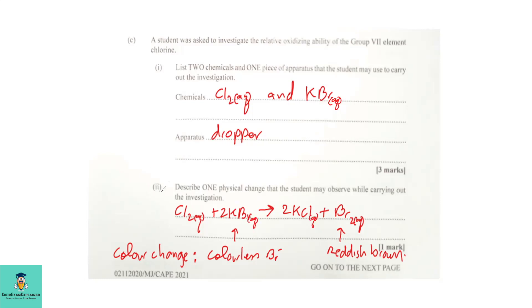See part two. Describe one physical change that the student may observe while carrying out the investigation. Well, you are going to add aqueous chlorine drop-wise to a test tube containing aqueous potassium bromide and observe. Now, the aqueous chlorine should be pale green, while the aqueous potassium bromide is colorless.